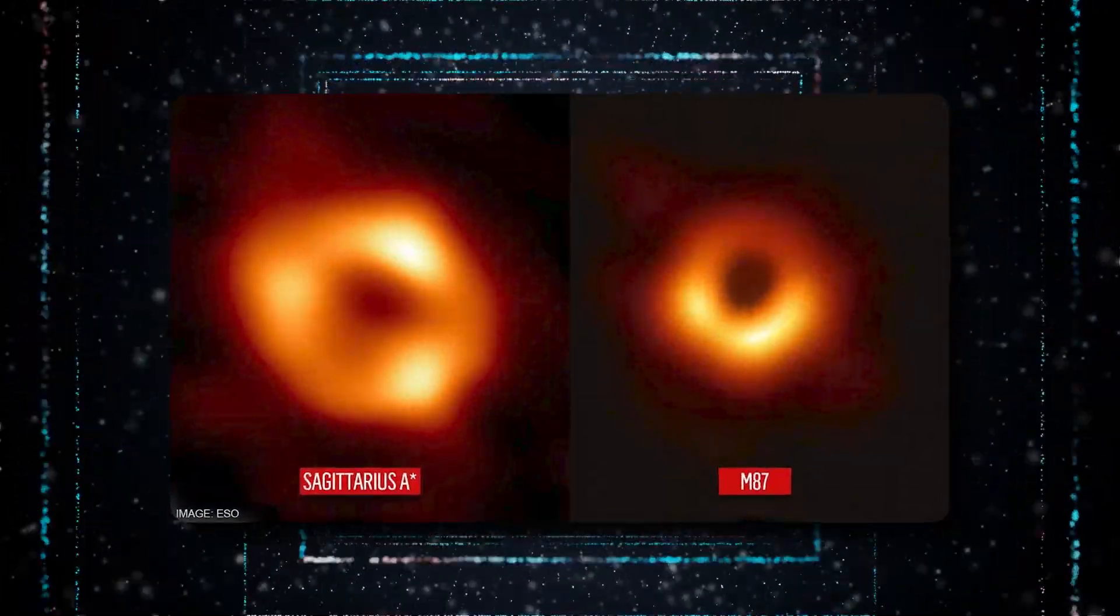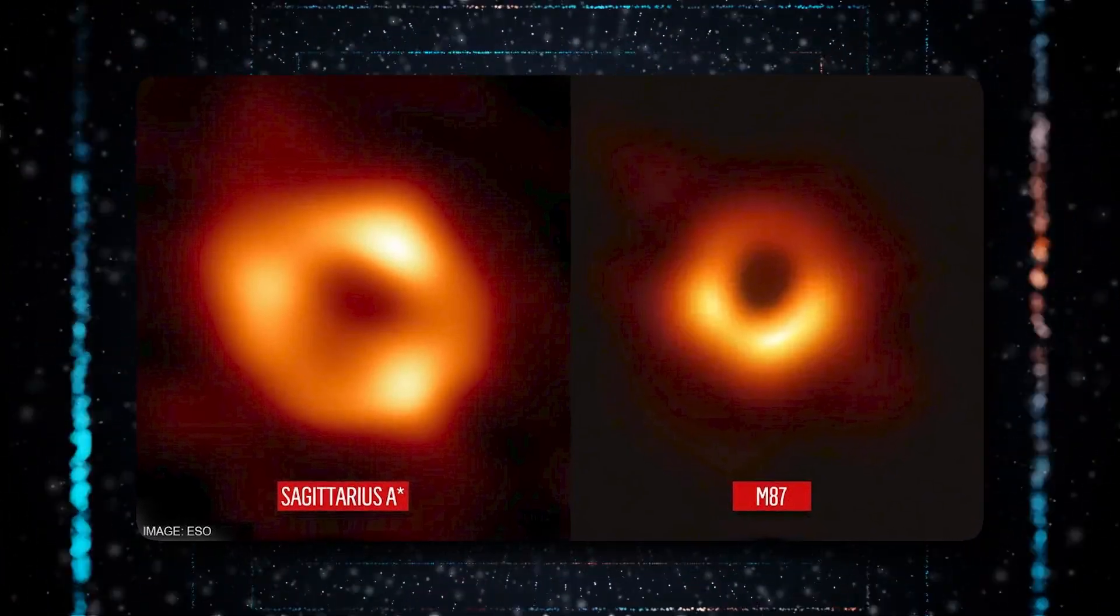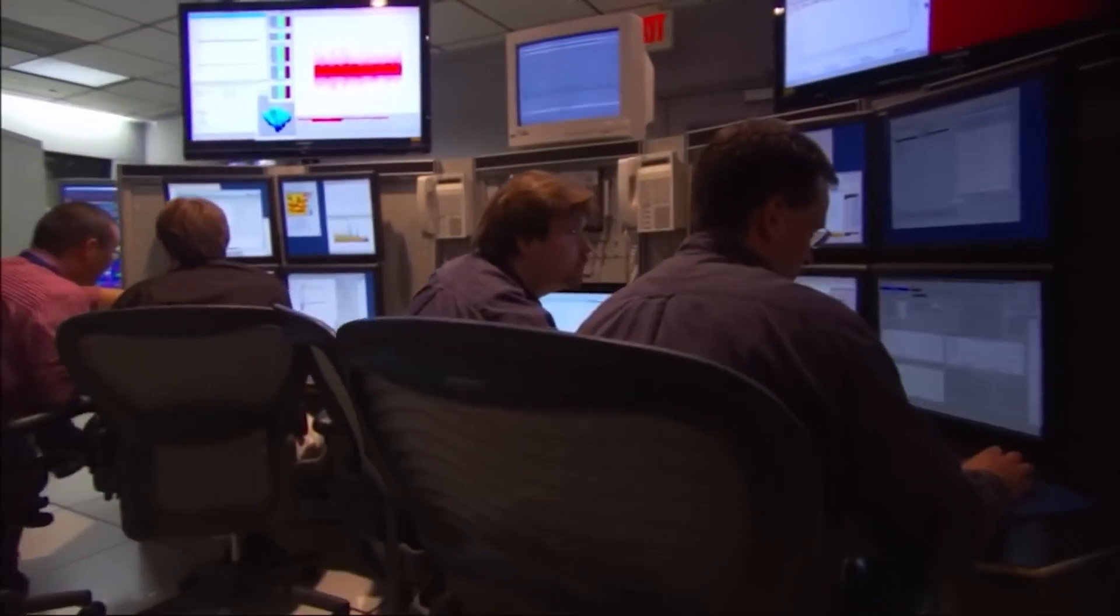With information from studying both Sagittarius A and M87, scientists can finally compare and learn more about these mysterious objects. While we can't get as close to M87 as we can to Sagittarius A, the fact that we can study two black holes opens up many doors for the world of science to learn more about them.